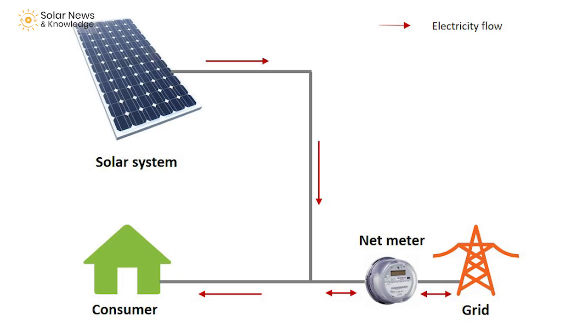Net metering is the situation in which a consumer can connect their solar system with the grid, so that you can take electricity from the grid when your solar system is not generating, and you can give electricity to the grid when your solar system is generating more electricity than you are consuming. There is a difference between net metering and gross metering, and I'll show you that difference before we do the calculation.